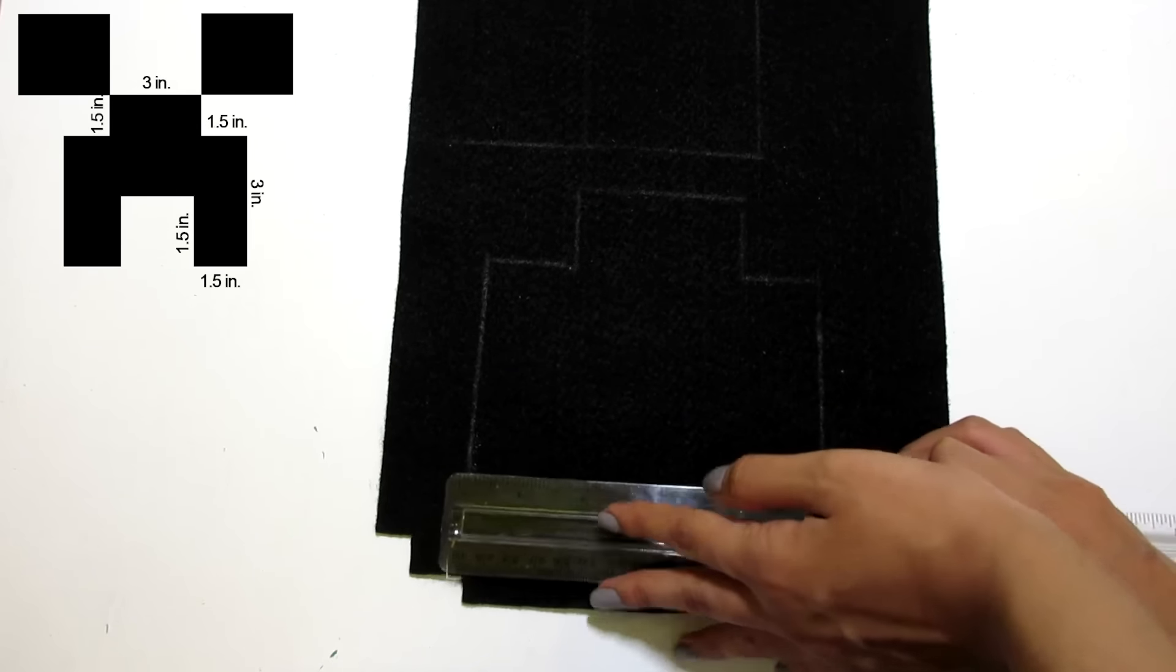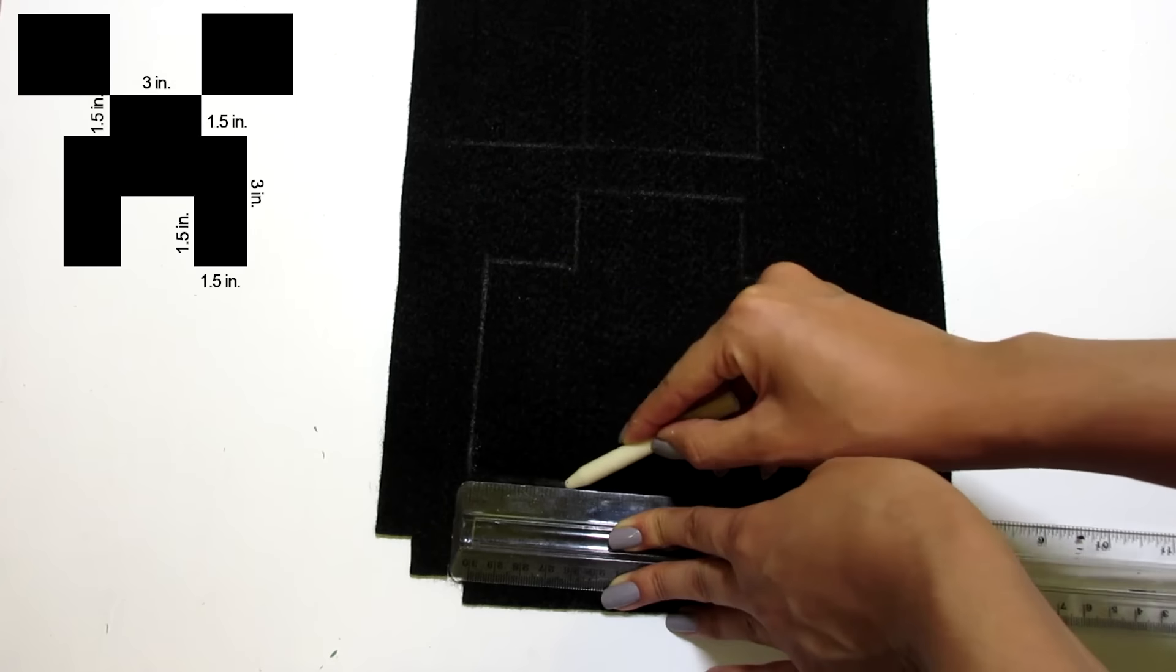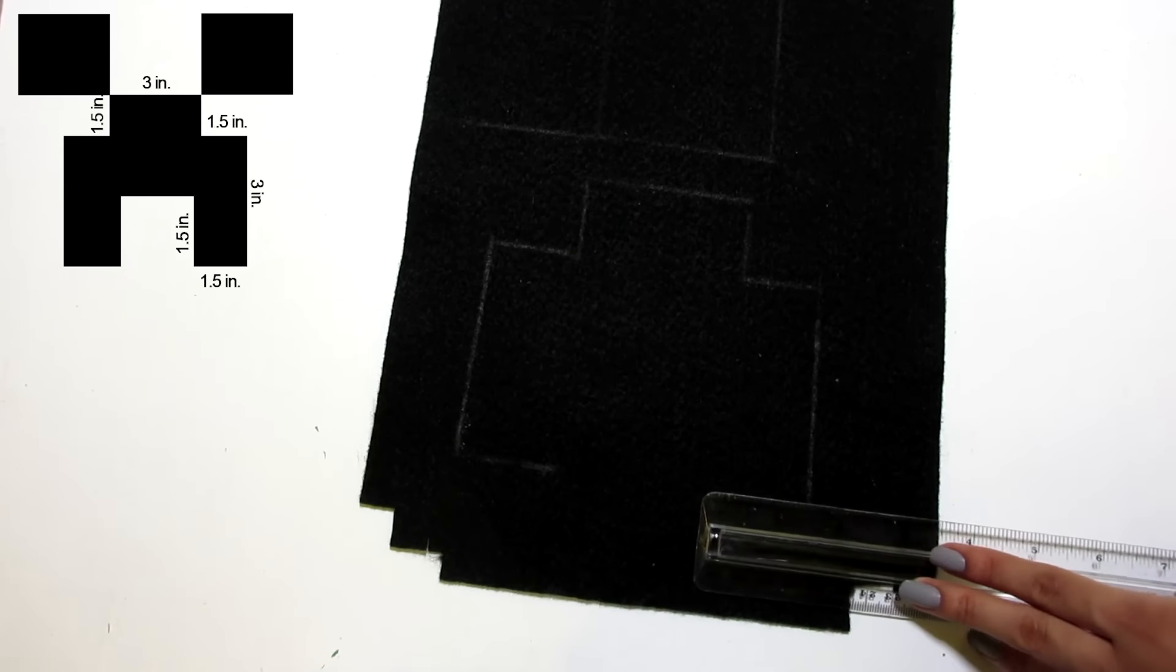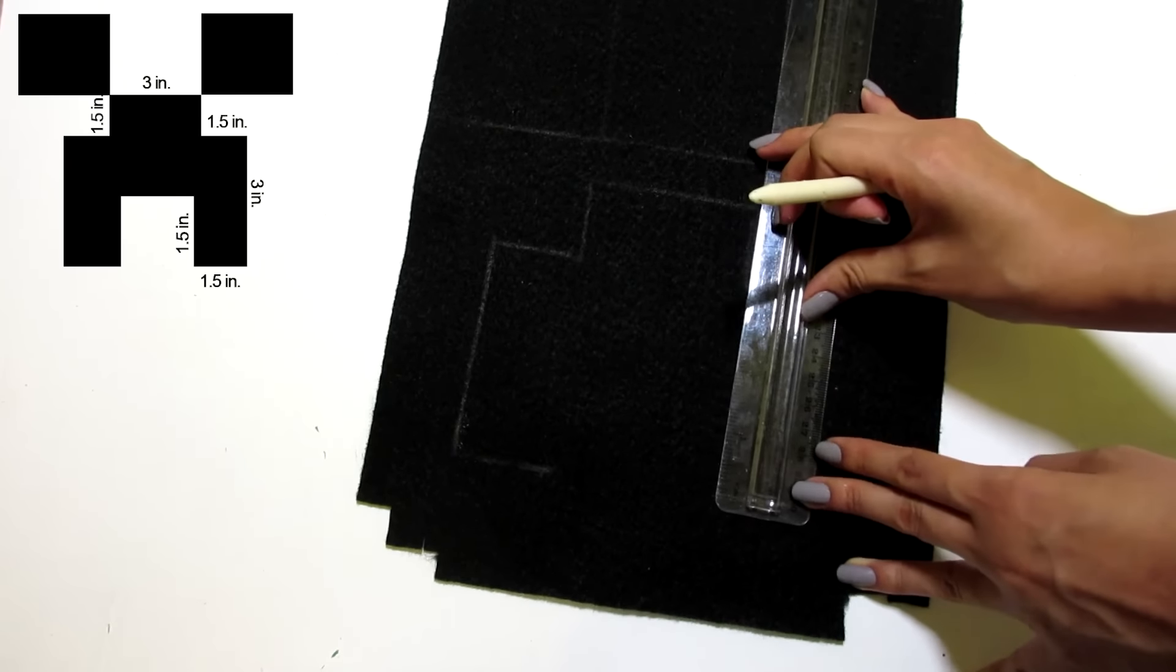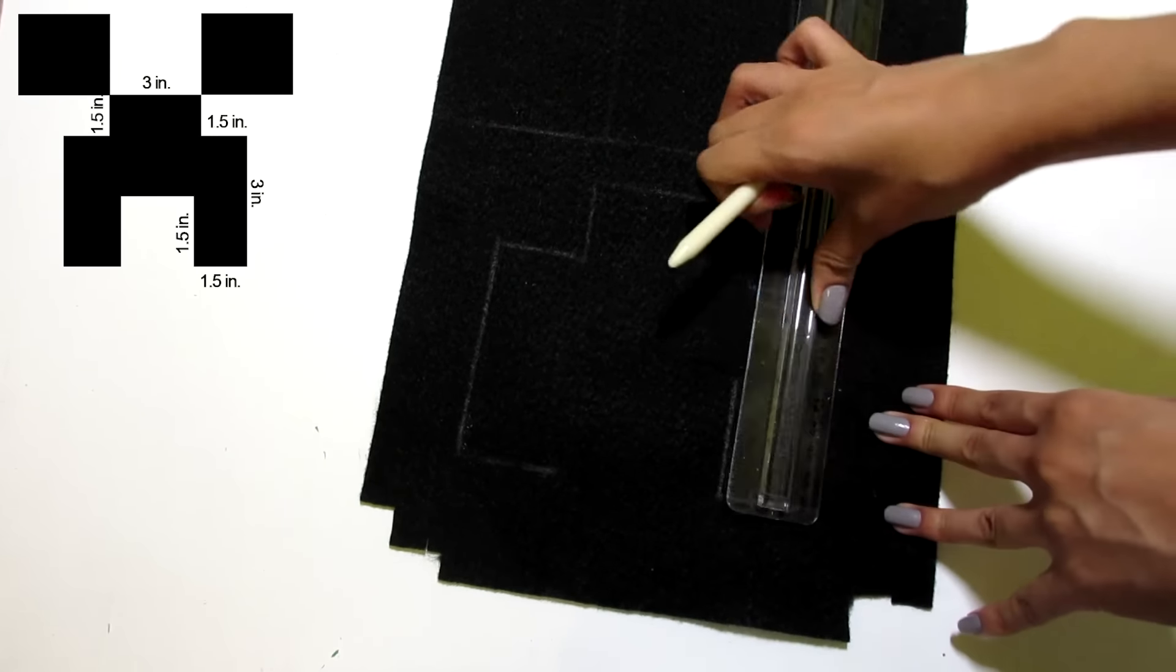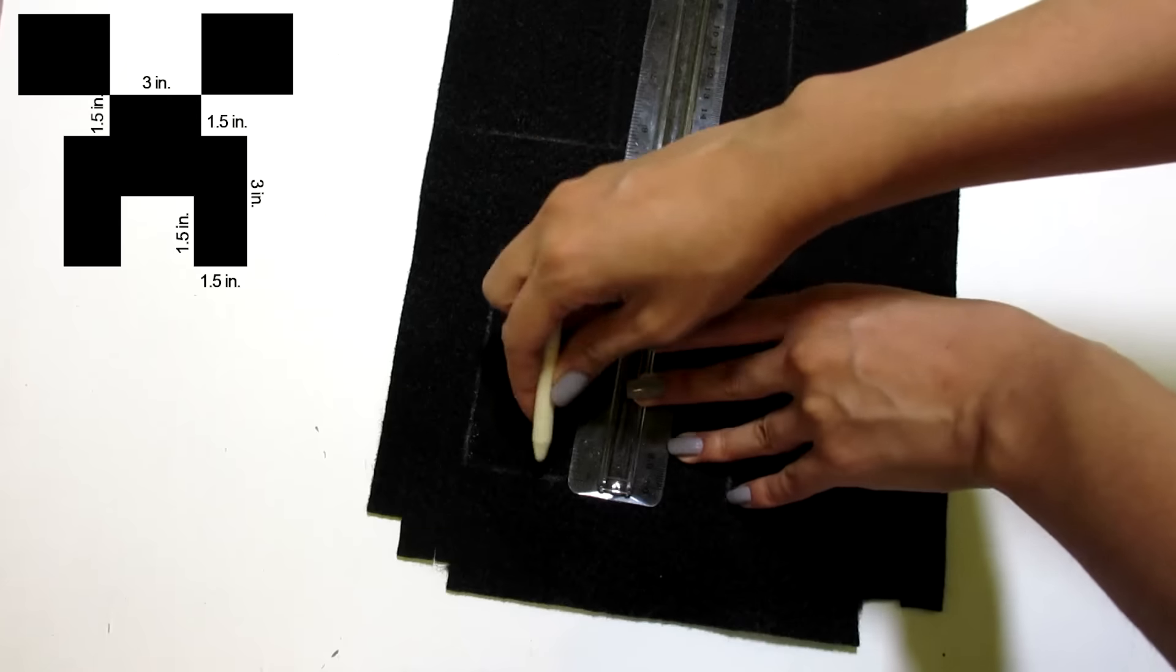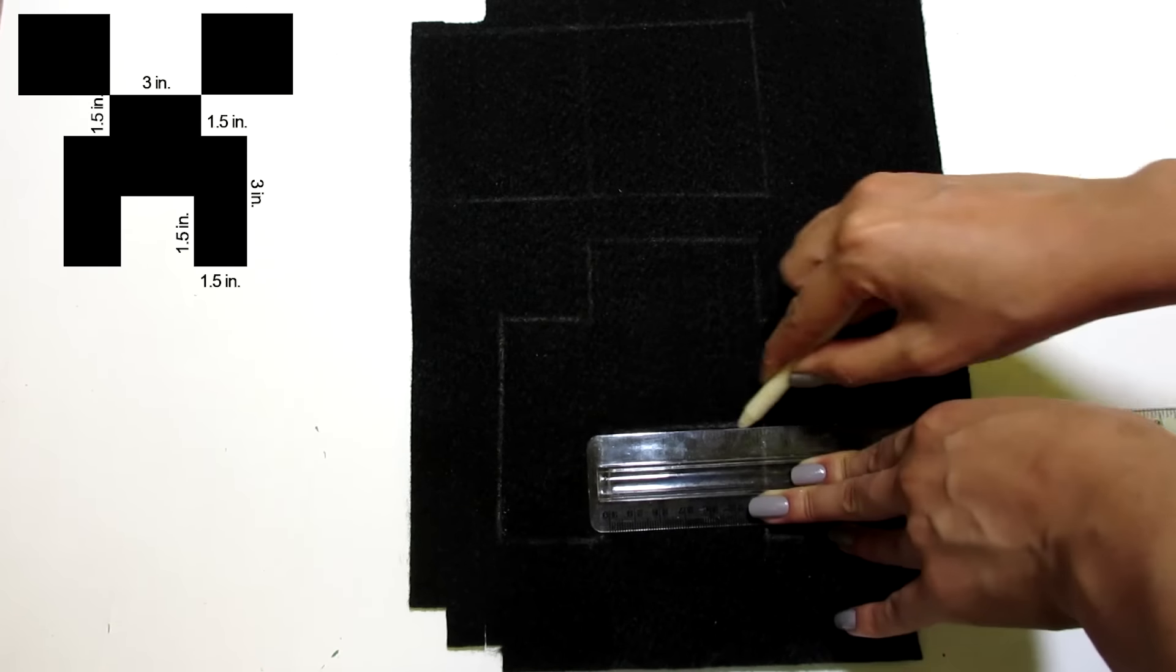Then, draw a 1.5 inch line going inward on both sides. From there, go up 1.5 inches on the left and the right side. Lastly, connect both of these points.